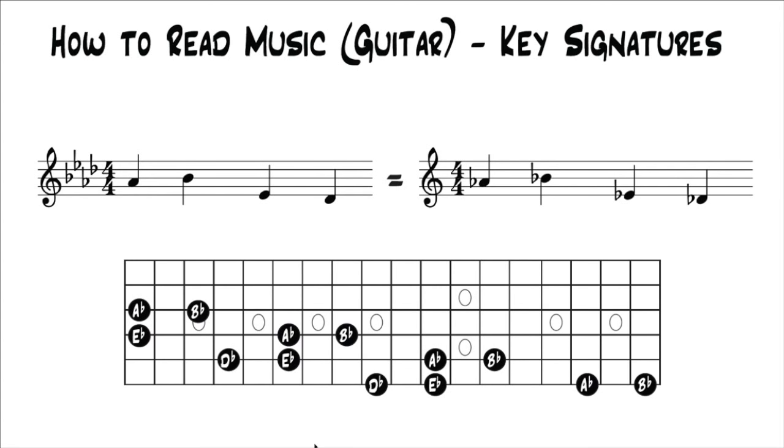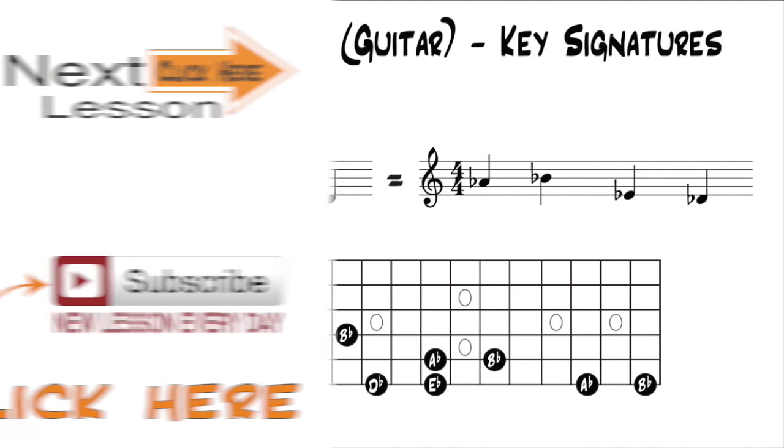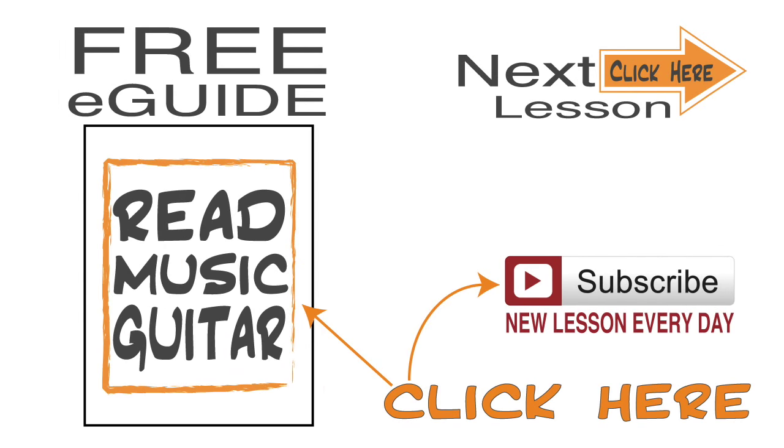Again, we're going to dive deeper into this. I'm going to explain it in a lot more detail, so it'll make a lot more sense. But for now, it's just really important to understand that concept, what a key signature is, where it lands on your staff, and what the symbols mean as far as where they're landing in the staff, and what it does to the notes in that piece. So that's an explanation of key signatures.